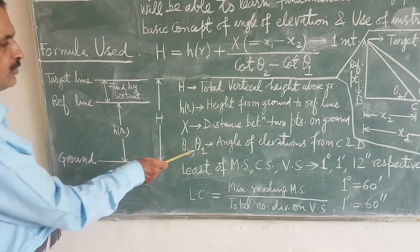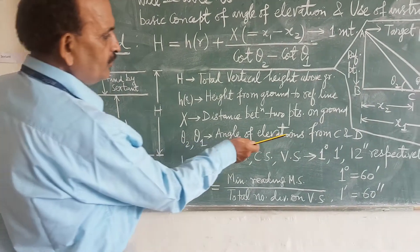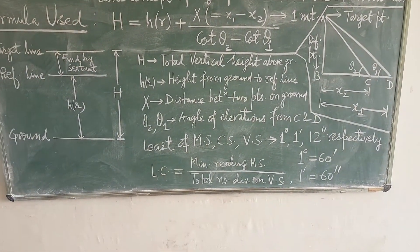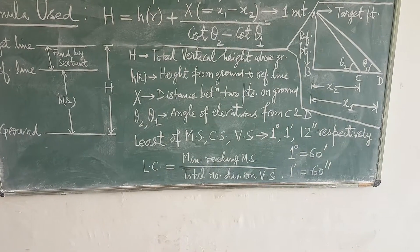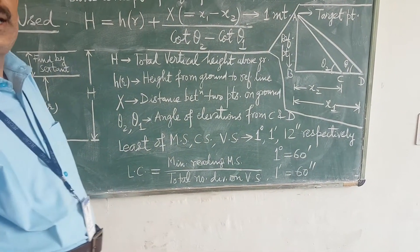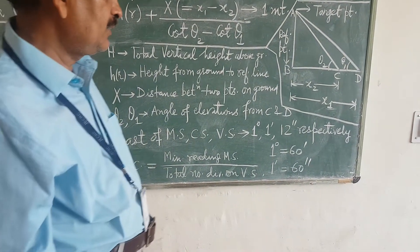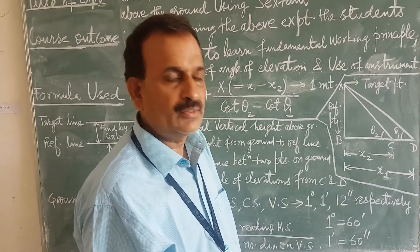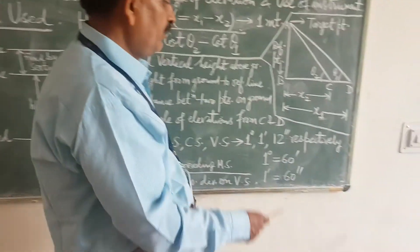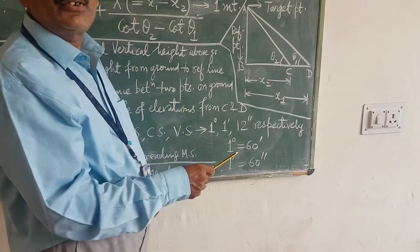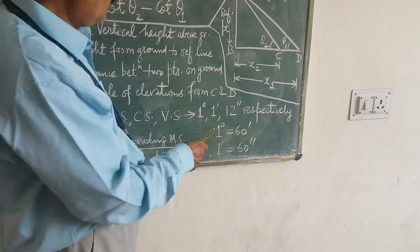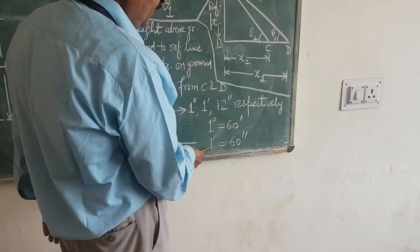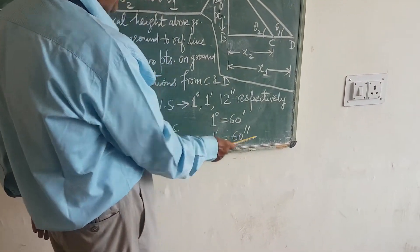Theta 1 and theta 2 are angular elevations from C and D. A very important thing: angular distances are always measured in degrees, minutes, and seconds. One degree is equal to 60 minutes, and 1 minute is equal to 60 seconds.